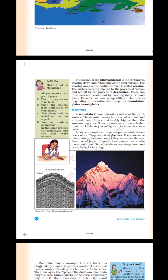The second, or external process, is the continuous wearing down and rebuilding of the land surface. The wearing away of the earth's surface is called erosion. The surface is being lowered by the process of erosion and rebuilt by the process of deposition. These two processes are carried out by running water, ice and wind. Broadly, we can group different landforms depending on elevation and slope as mountains, plateaus and plains.